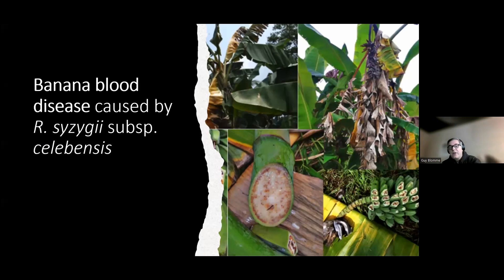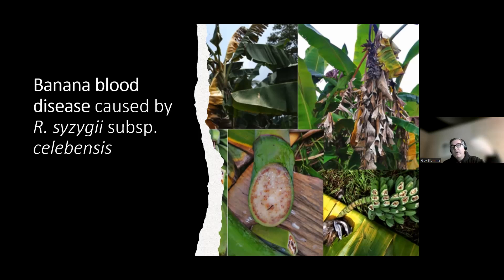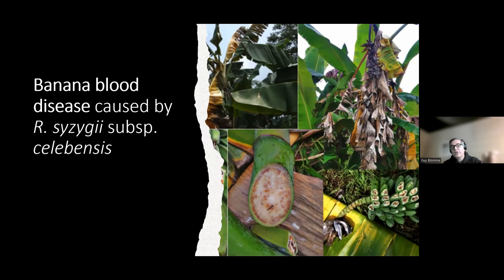Just quickly as a comparison, to point out the clear similarities between Xanthomonas wilt and blood disease: in the case of Xanthomonas wilt, the discolorations are more yellowish or light brown, while in the case of blood disease, they tend to be darker brown or reddish in color.